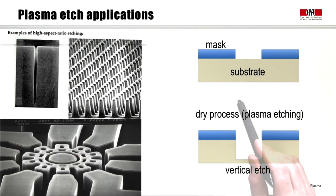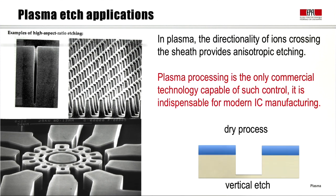However, with a plasma, since the ions come down directly through the photoresist, then we get a vertical etch. This is called dry process or plasma etching. So we see that in a plasma, the anisotropic etching is given by the directionality of ions crossing the sheath. A very important result is that plasma processing is the only commercial technology capable of such control. Plasma is indispensable for modern integrated circuit manufacturing.